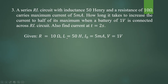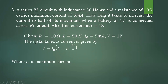Resistance is 10 ohm, inductance is 50 Henry, maximum current I0 is 5 milliampere, battery voltage V is equal to 1 volt. Then you have to find the current during growth of current. We know that the instantaneous current during RL circuit growth is I equal to I0 into 1 minus e to the power minus R by L into T, where I0 is the maximum current.